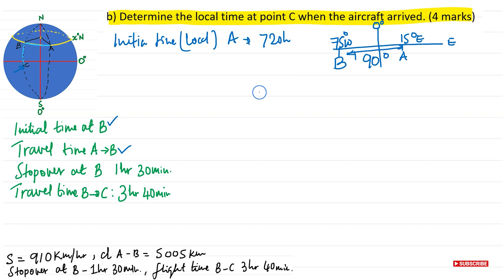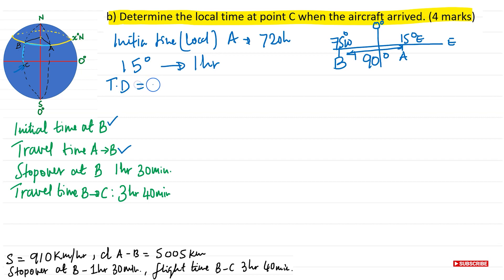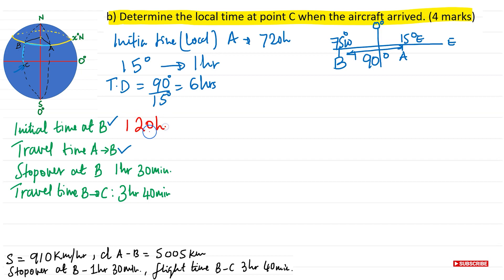For every 15 degrees of longitude, the time difference is 1 hour. With a 90-degree difference: time difference = 90/15 = 6 hours. Since B is west of A, B is 6 hours behind A. So the local time at B when the aircraft departed A at 0720 hours was 0720 − 6 hours = 0120 hours.